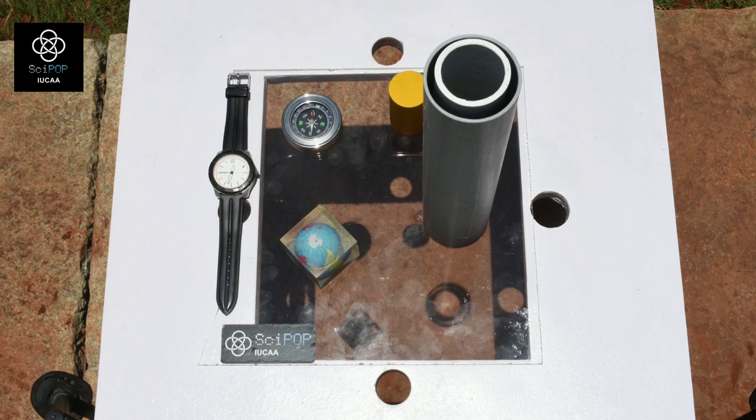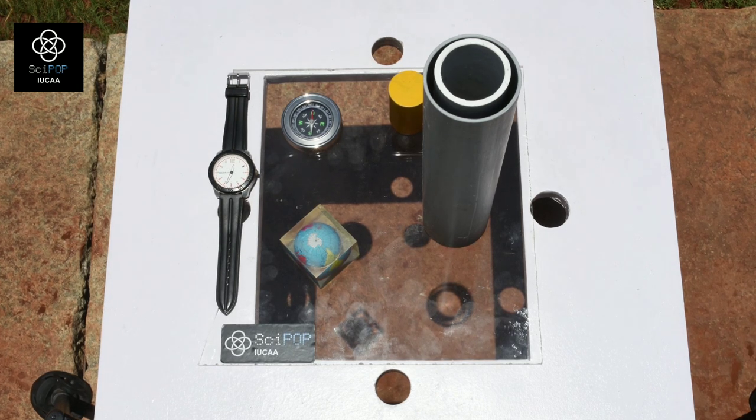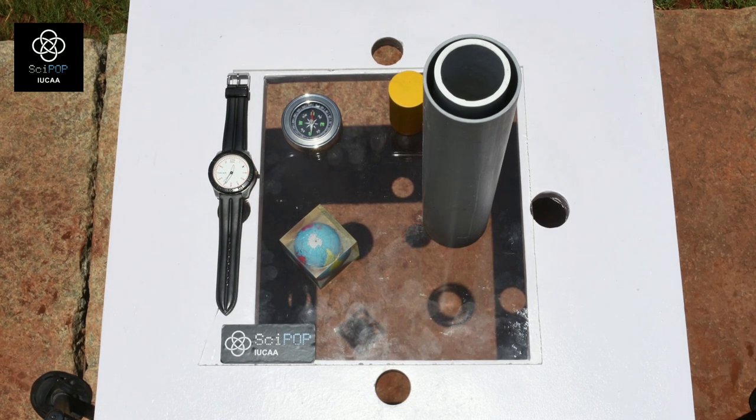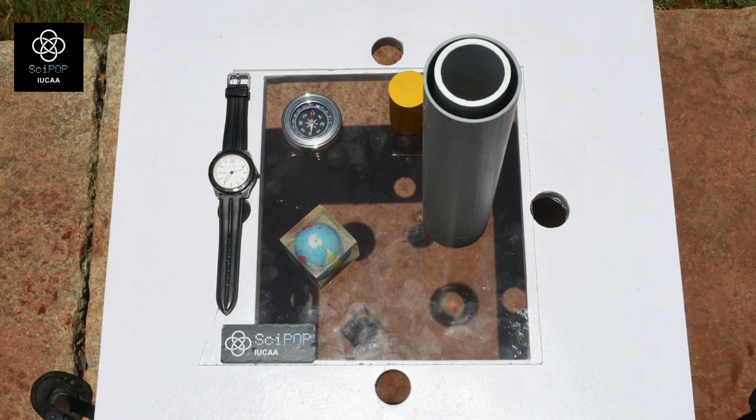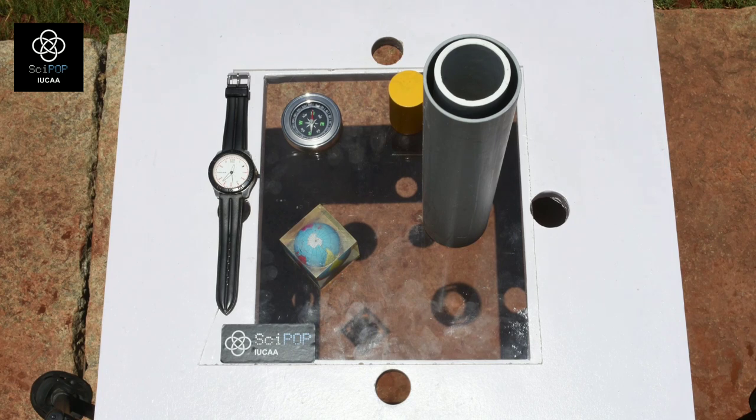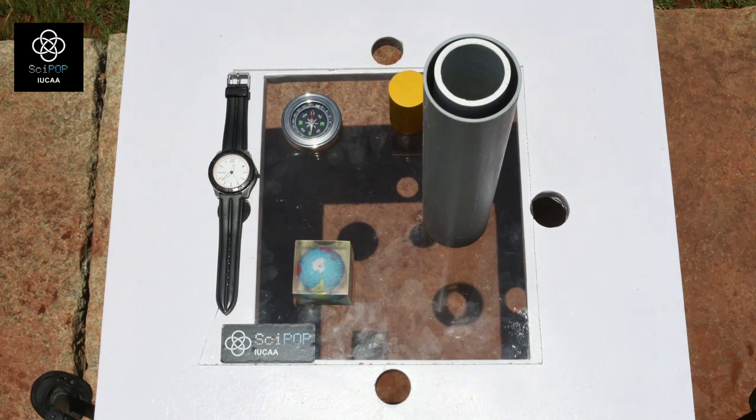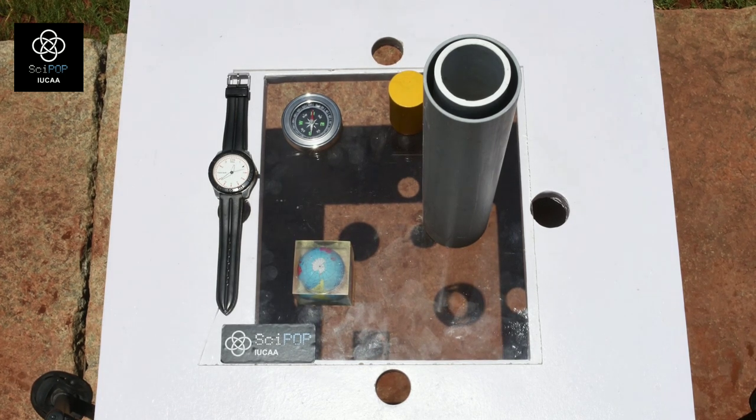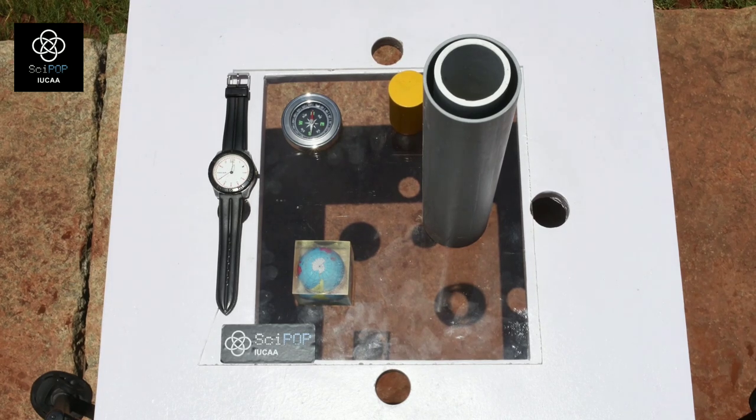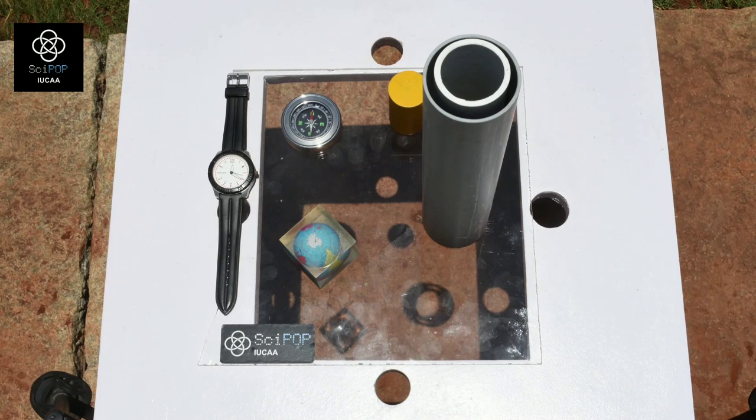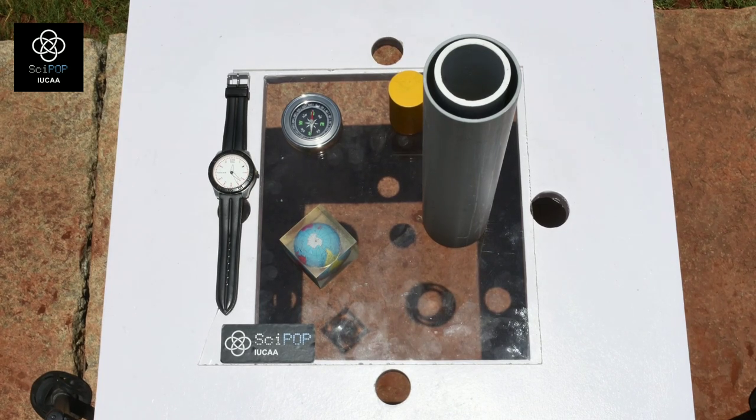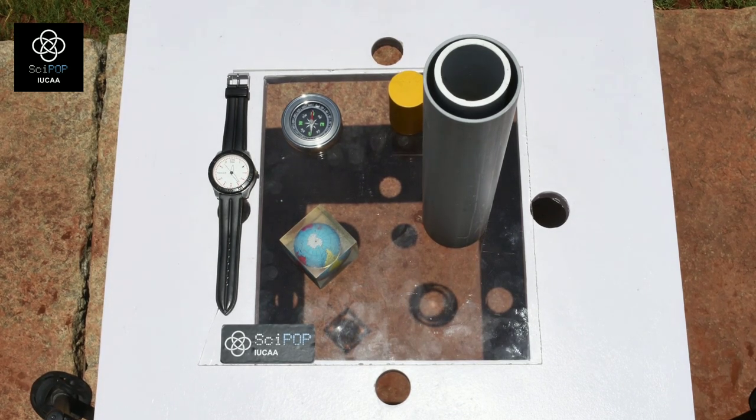Some of the objects are kept on a glass plate. We can see that at local noon, the shadows come exactly beneath the objects. If there was no glass plate in between and the objects were on the ground, we wouldn't have seen these shadows. The shadows could be observed disappearing beneath the objects.